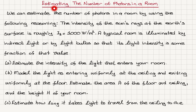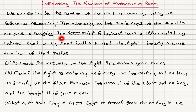Estimating the number of photons in a room. We can estimate the number of photons in a room by using the following reasoning. The intensity of the sun's rays at the Earth's surface is roughly I_t equals 1000 watts per meter squared.